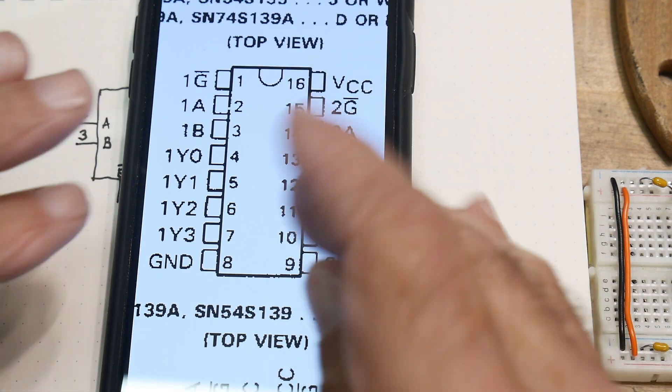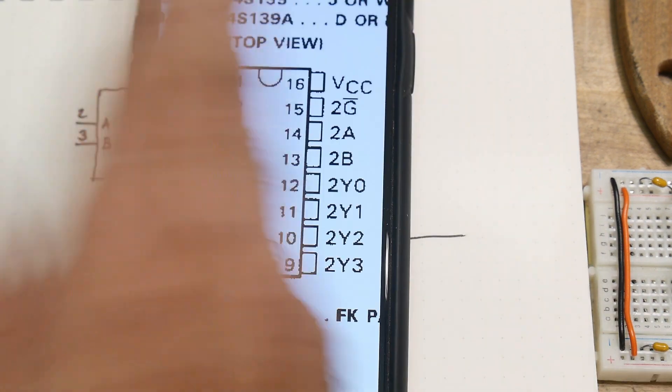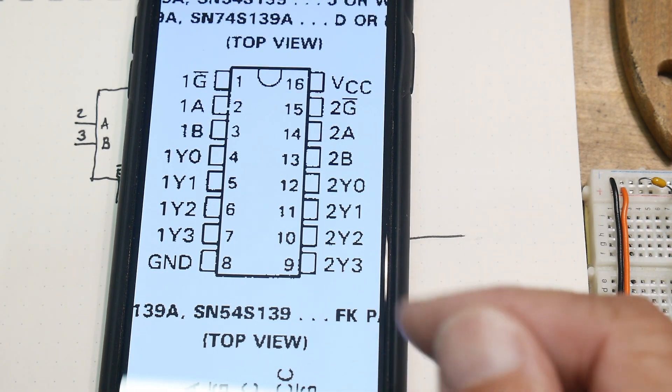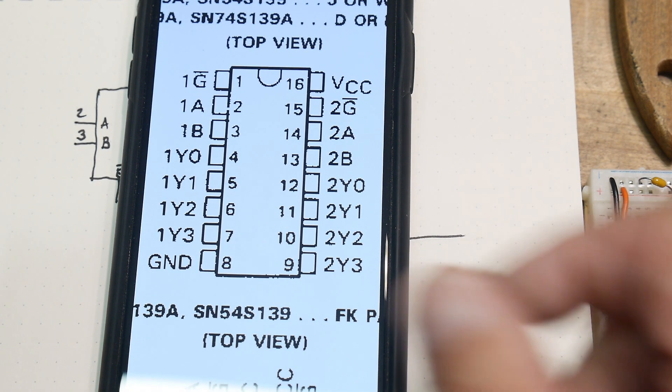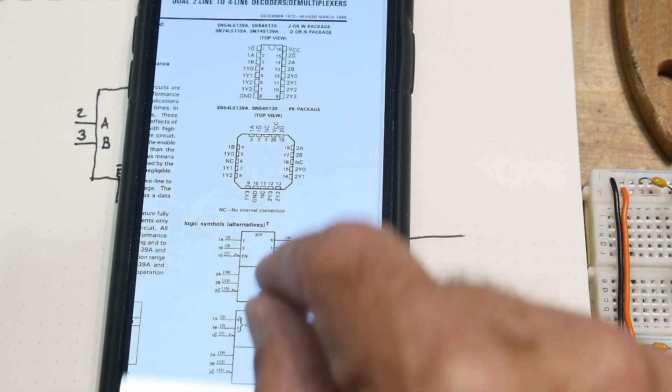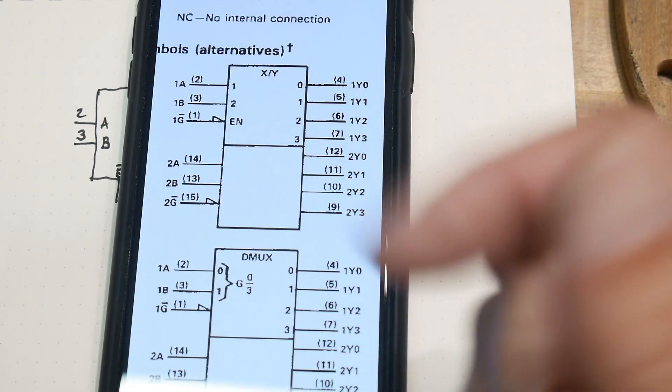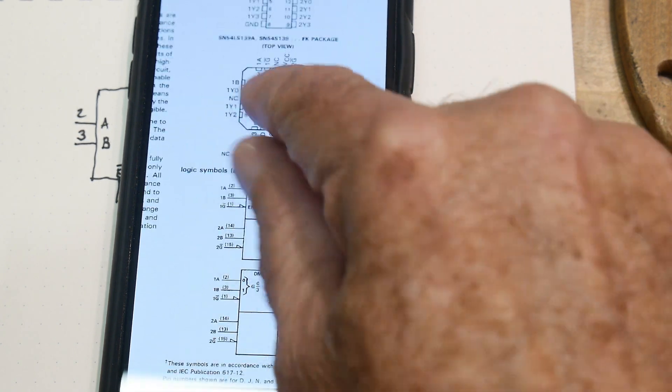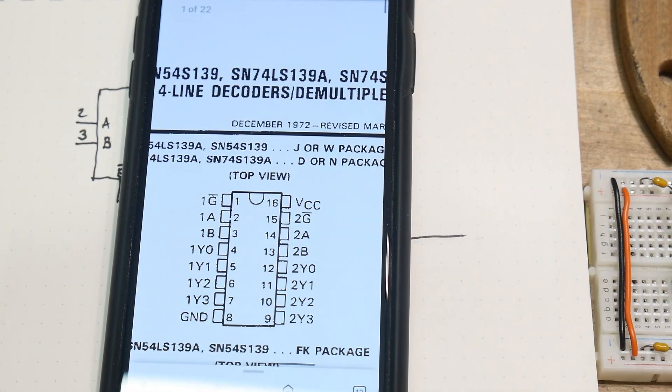And the pinout is actually pretty nice on this part, because all the one things are on one side and all of those two things on the other side. So they did pay some attention to the pinout on this IC. So that was pretty nice. And then these useless diagrams here that I really, really hate. But anyway, there you go. Chip of the day, LS 139.